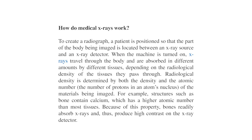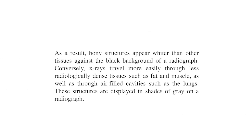To create a radiograph, a patient is positioned so that the part of the body being imaged is between an x-ray source and a detector. X-rays travel through the body and are absorbed in different amounts depending on the radiological density of the tissues, which is determined by both density and atomic number. Structures such as bone contain calcium, which has a higher atomic number than most tissues, causing bone to absorb x-rays and appear white.